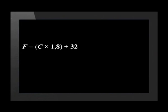In our second example, we will convert a temperature in degrees Celsius to degrees Fahrenheit. The formula we need for this is: degrees Fahrenheit equals degrees Celsius multiplied by 1.8, and then we add 32.